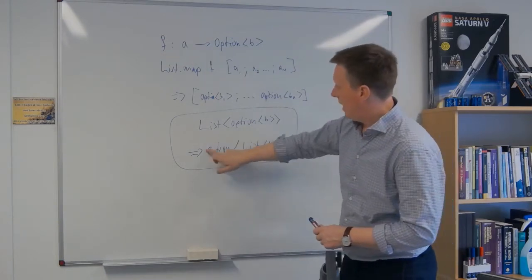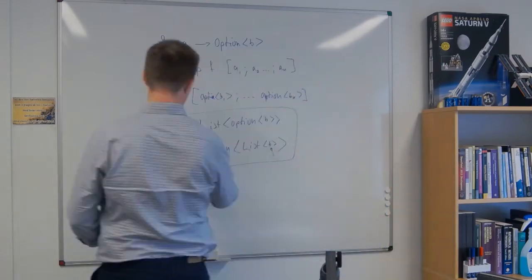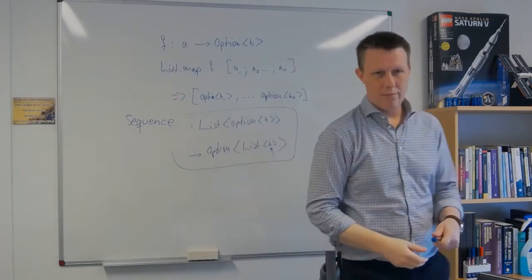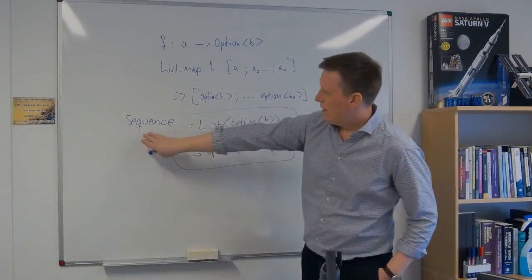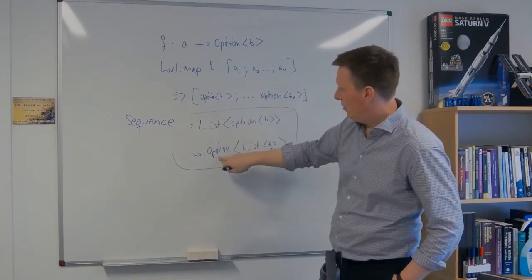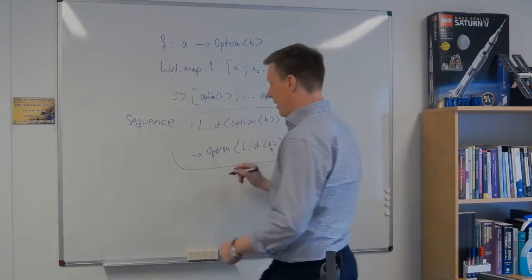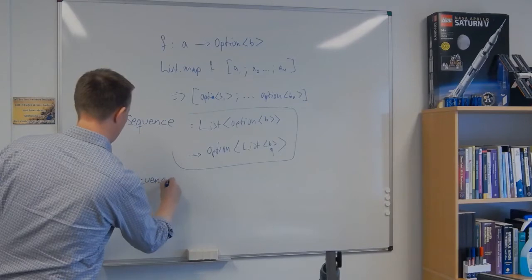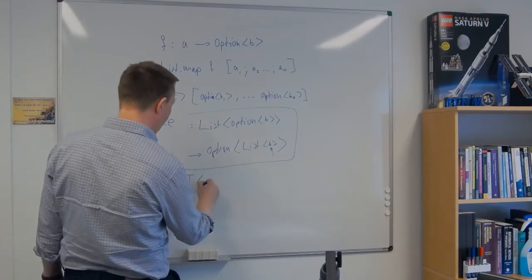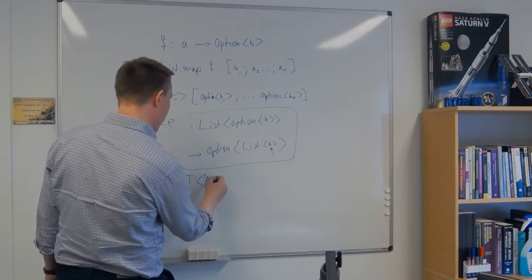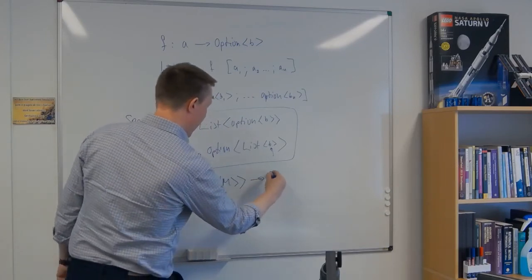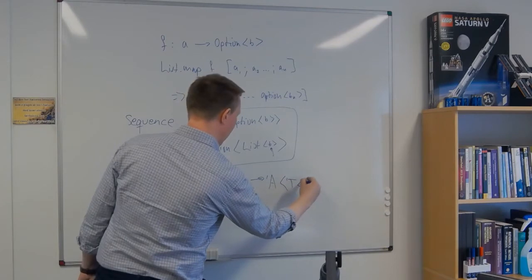This particular thing is something we can turn into a function called sequence. Sequence is a function which takes a list of options of something and turns it into an option of list of something. More generally, we can write sequence like this: we have some T (that's T for traversable), and a function of an A of an m, and we turn it into an A of T of m.